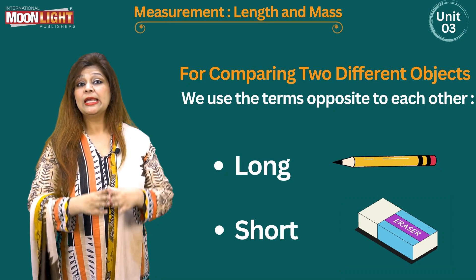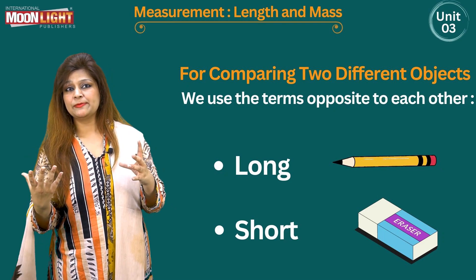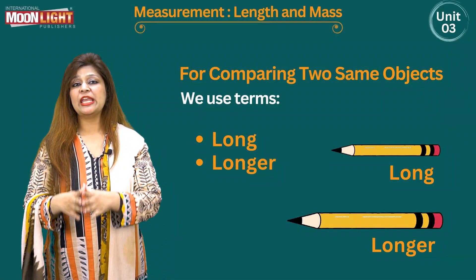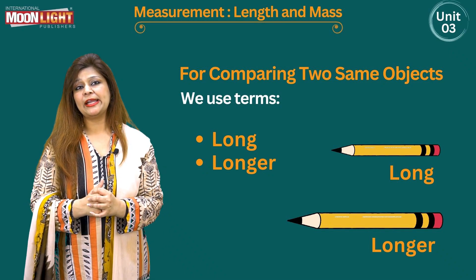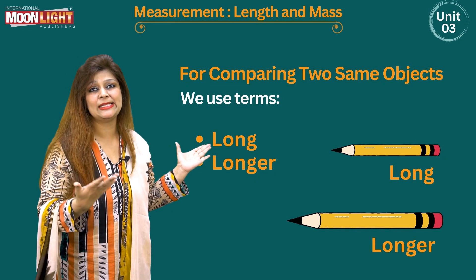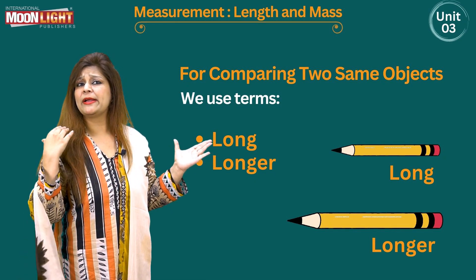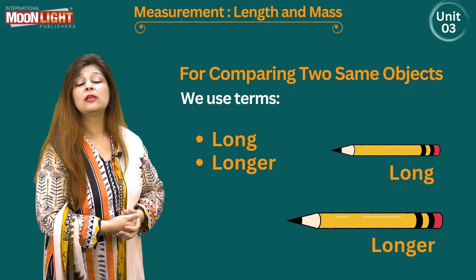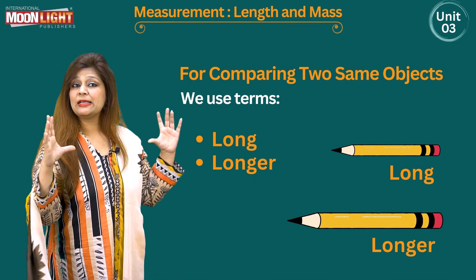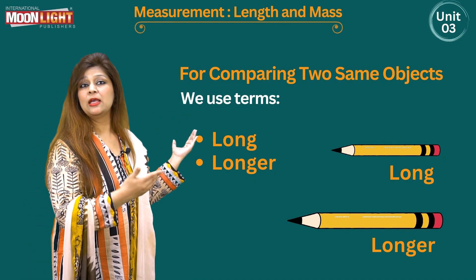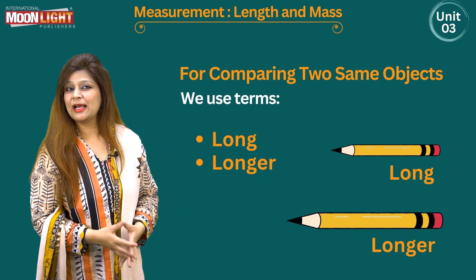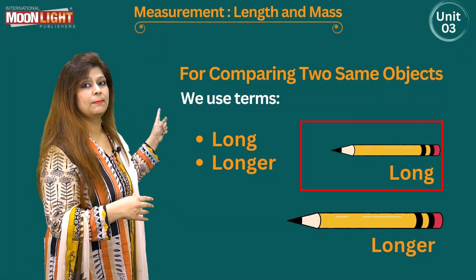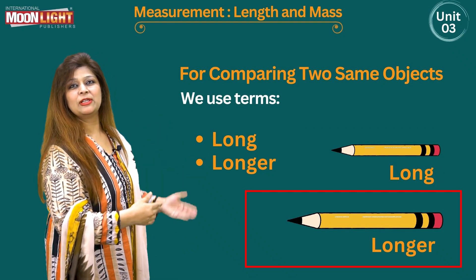When we have more than two objects, what do we do? For example, if we compare pencils — the same type of object — the terms will be long and longer. We say that Aslam has a longer pencil than Ali. Do remember that longer means more longer than the given long one.